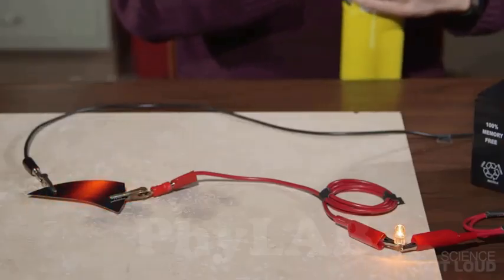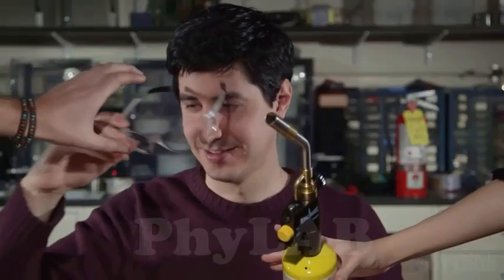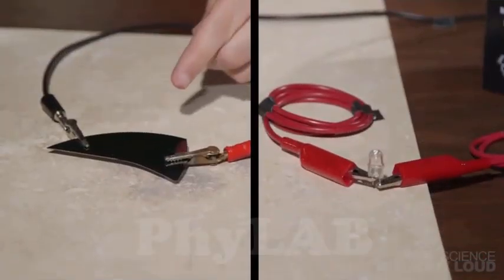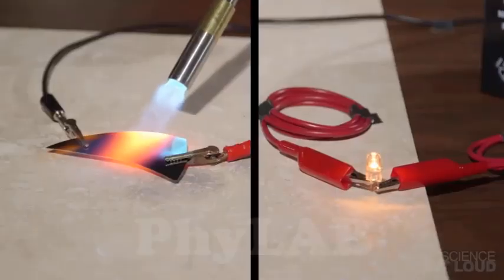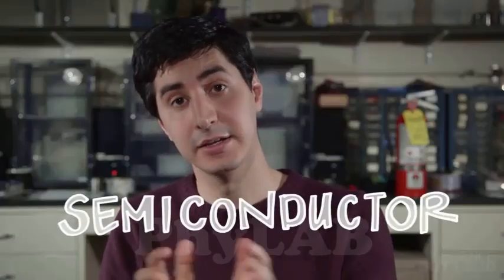It lights up. The silicon is insulating at room temperature, but conducts electricity when it's very hot. It's a semiconductor, whose conductivity changes based on the environment.